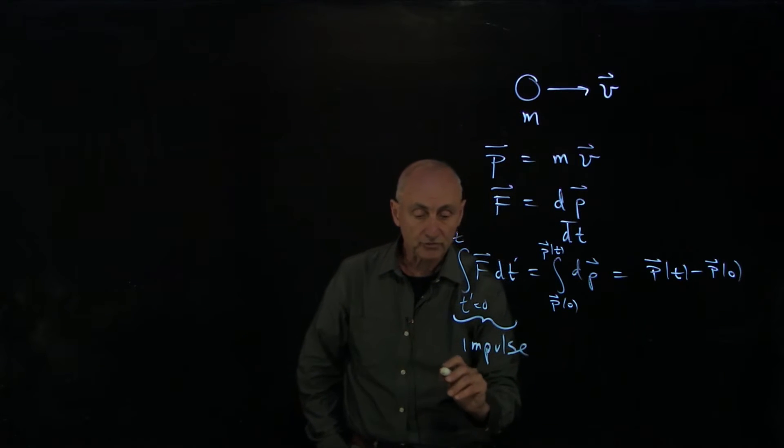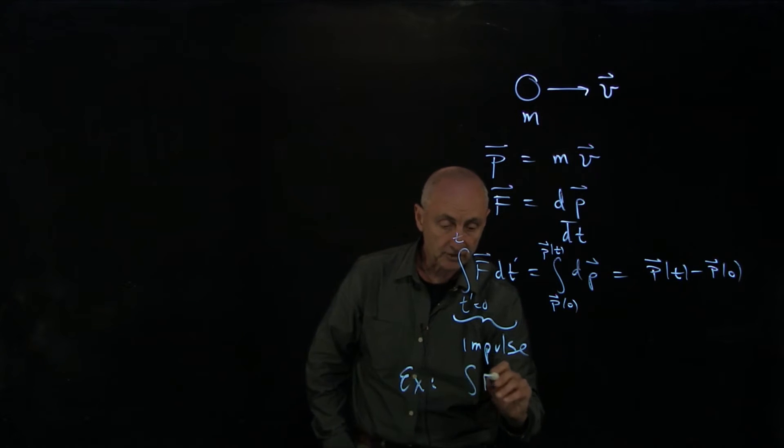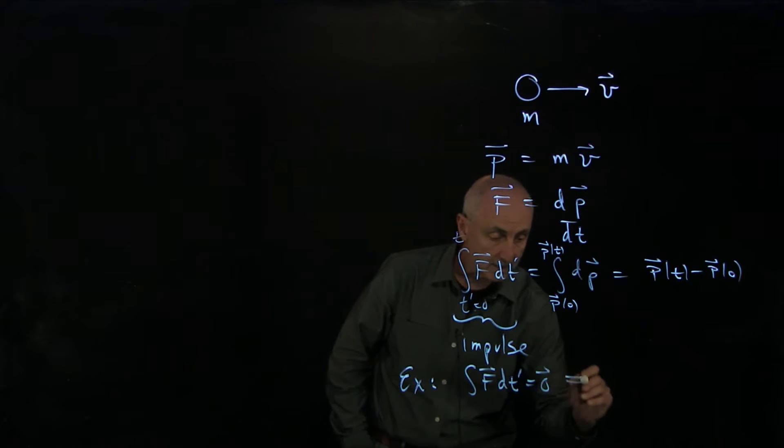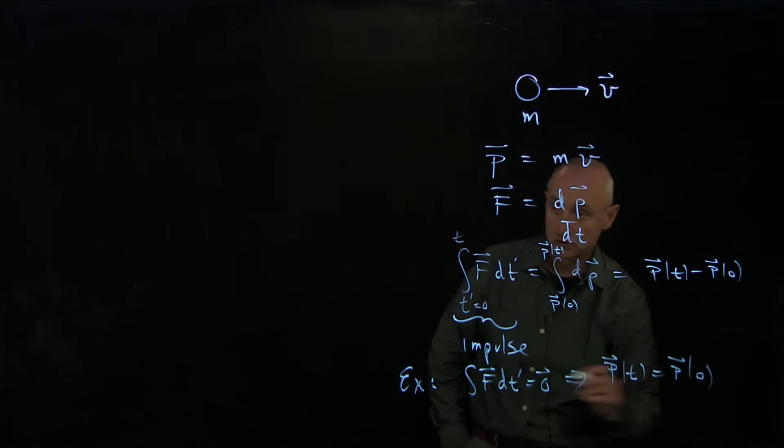If the impulse is zero, as an example, if the impulse ∫F dt' equals 0, that tells us that the momentum of our particle has not changed.